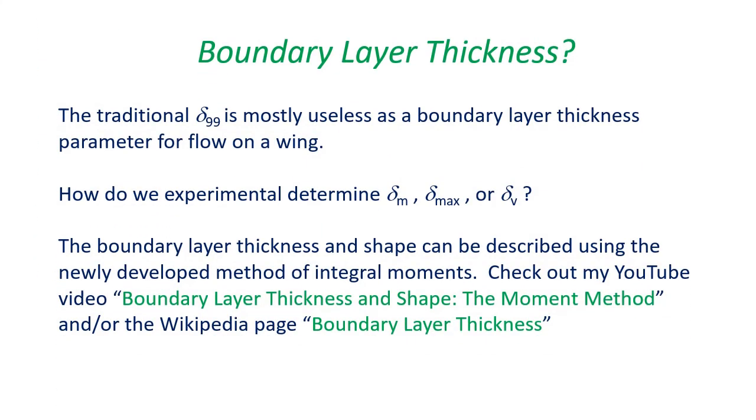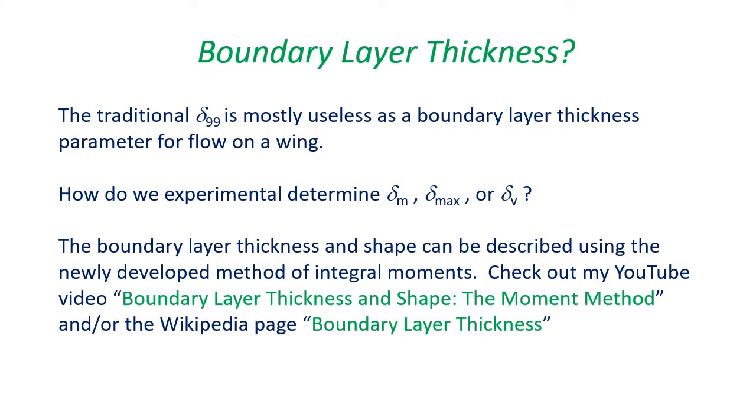The new framework is only part of what is needed. You also have to be able to physically describe the thickness and shape of the boundary layer. The traditional delta-99 parameter is pretty much useless as a boundary layer thickness for flow on a wing. However, there is a relatively new way to describe the thickness and shape of the boundary layer that provides the needed analytics. It borrows from the method for describing probability functions using integral moments. Check out my YouTube video, A New Way to describe boundary layer thickness and shape, or the Wikipedia page boundary layer thickness.